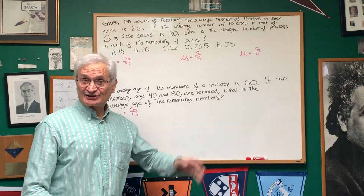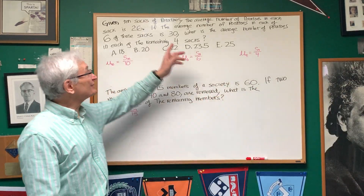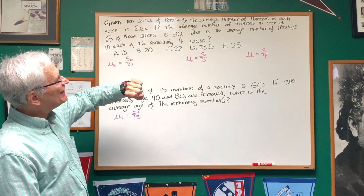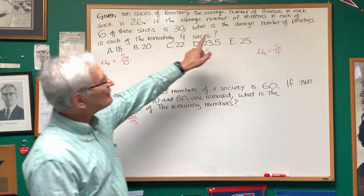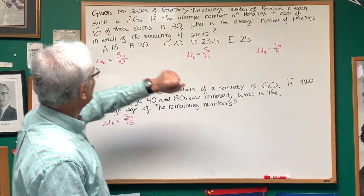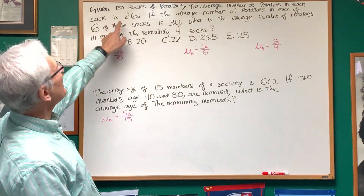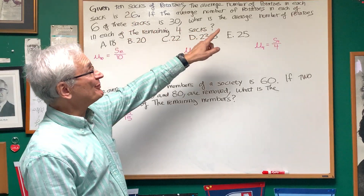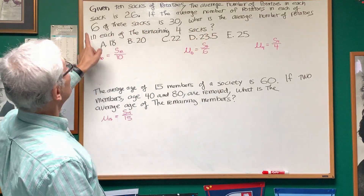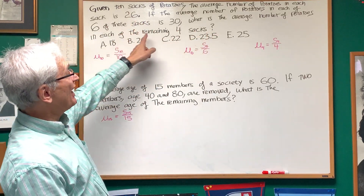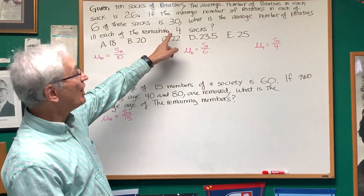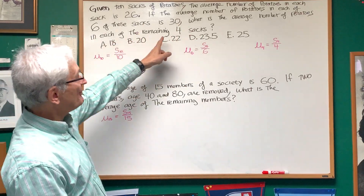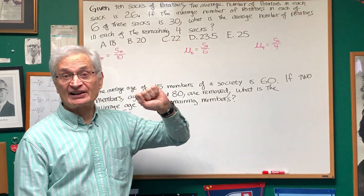Okay, let's do these two problems. Let's look at the first one. Given 10 sacks of potatoes, the average number of potatoes in each of the sacks is 26. If the average number of potatoes in each of 6 of those sacks is 30, what is the average number of potatoes in each of the remaining 4 sacks?